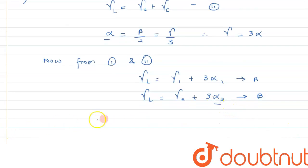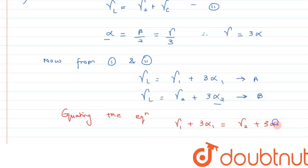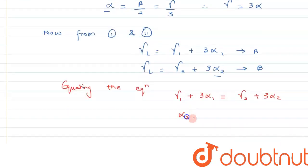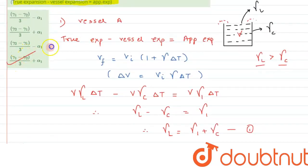We want to find α2. Equating the two expressions: γ1 + 3α1 = γ2 + 3α2. Solving for α2: α2 = (γ1 − γ2) / 3 + α1. This is the final expression for the coefficient of linear expansion for vessel B, which matches option D.